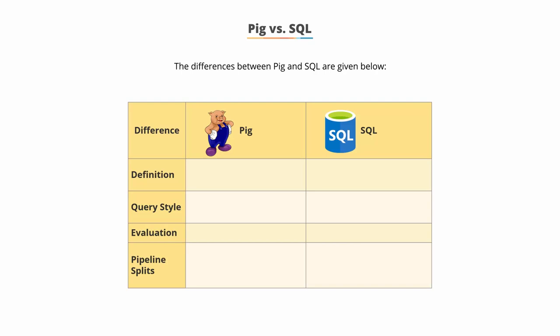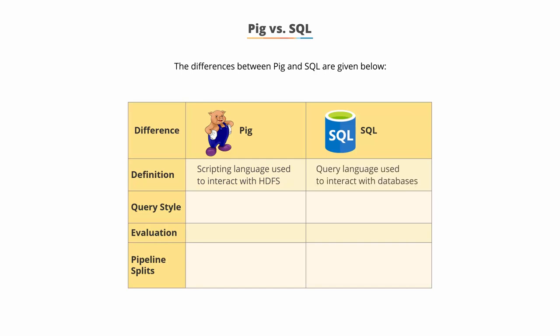The first difference between Pig and SQL is that Pig is a scripting language used to interact with HDFS, while SQL is a query language used to interact with databases residing in the database engine. In terms of query style, Pig offers a step-by-step execution style compared to the single block execution style of SQL.